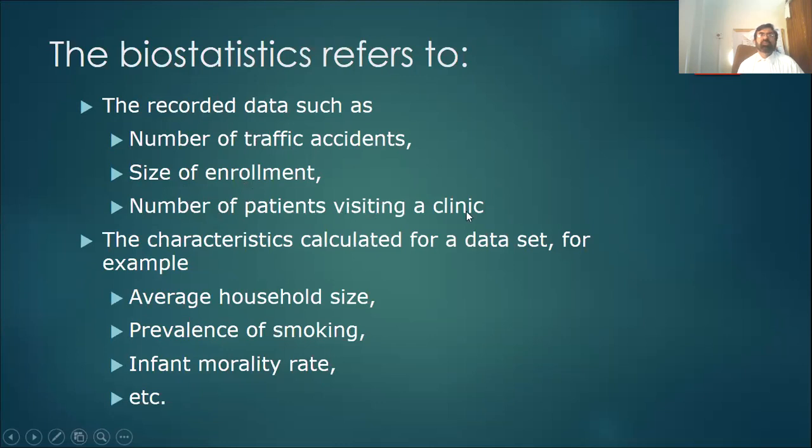Biostatistics refer to recorded data such as number of traffic accidents, size of enrollment, number of patients visiting the clinic. How many traffic accidents occur on a particular day - 10 accidents, 20 accidents, 30 accidents. How many students got enrollment or admission in a particular institute or university. How many patients are visiting a particular clinic - that's also statistics. A characteristic calculated for a dataset, for example, average household size.